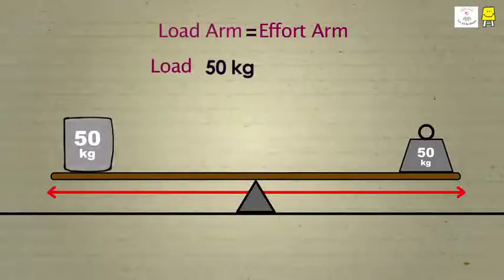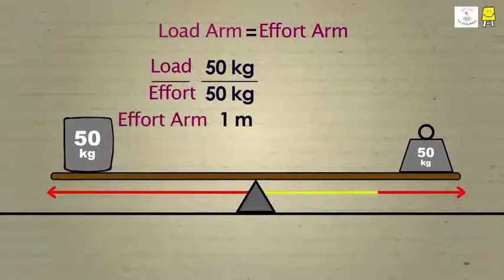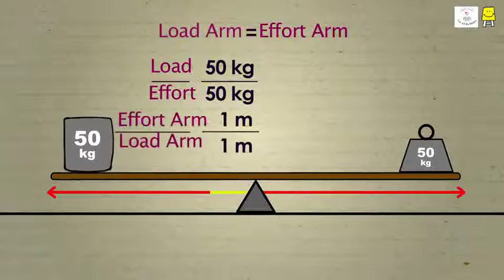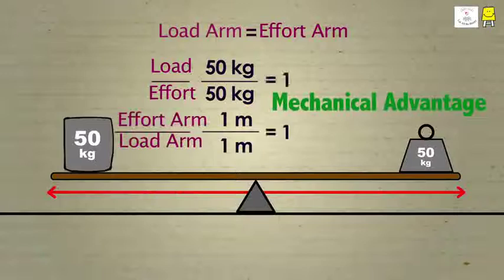Thus, 1 meter effort arm by 1 meter load arm equals 50 kilograms load by 50 kilograms effort. This gives a mechanical advantage of 1. The effort applied is equal to the load to be lifted.